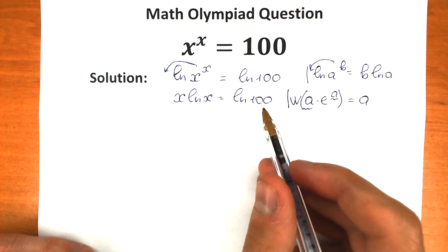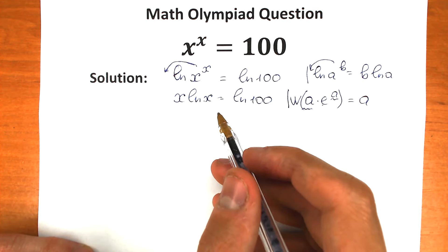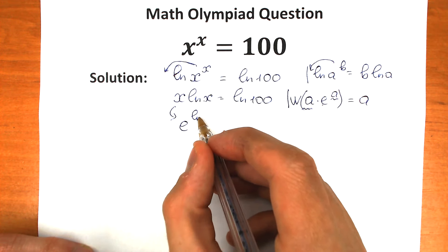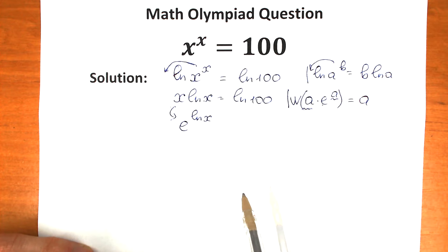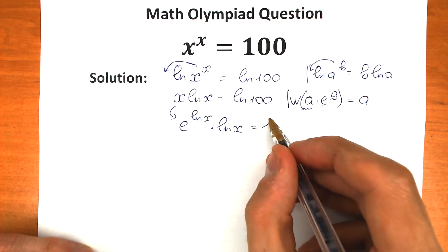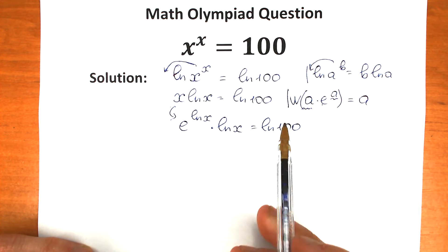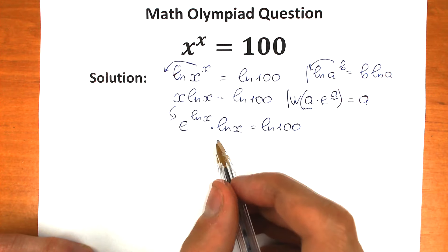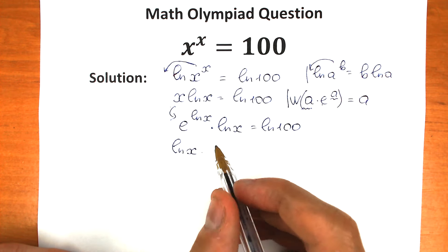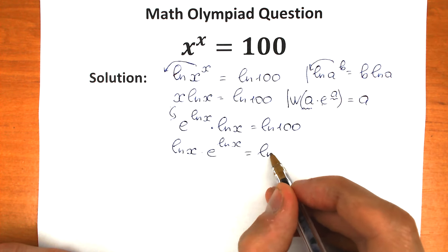Let's try to create the expression according to the Lambert W function form. We need to introduce e. Right now we don't have e explicitly in our expression. So let's write x as e to the power natural log x — these are absolutely the same thing. This gives us natural log x times e to the power natural log x, equal to natural log 100.